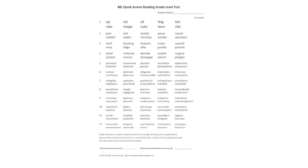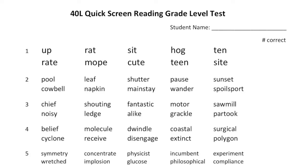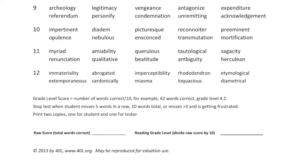The first test you need to give each student is the 40L Quick Screen Reading Grade Level test. This test is easy to give — you just have the student read through the words and count up the number correct. You stop after 10 total missed words or 5 missed words in a row. Then you divide the number of correct answers by 10 to get a reading grade level. One important thing to note: